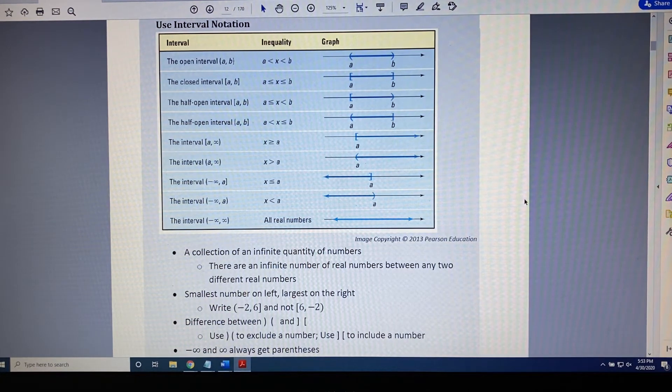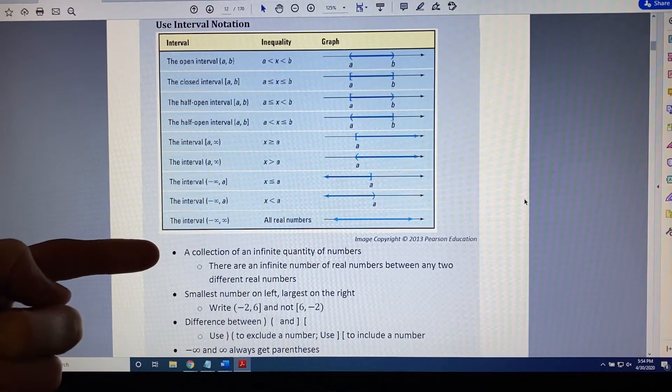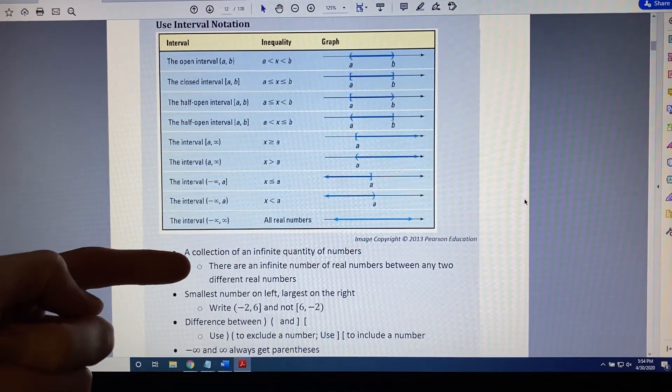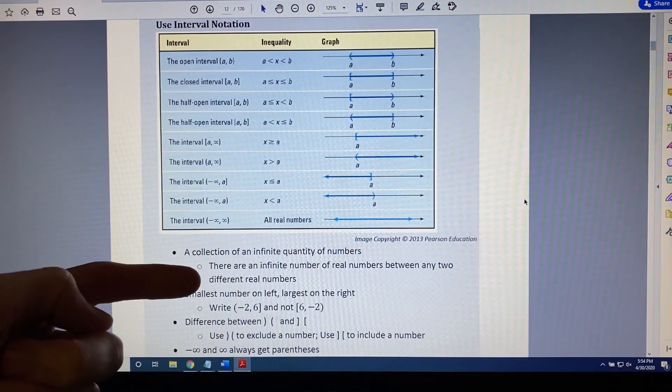Okay, now that you've had a chance to explore the different ways of communicating intervals, inequalities, and graphs, let's look at some facts. First of all, each of these is a way of collecting an infinite quantity of numbers. And there are an infinite number of real numbers between any two different real numbers.